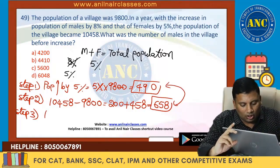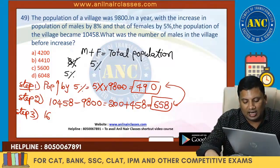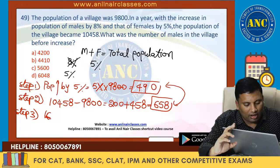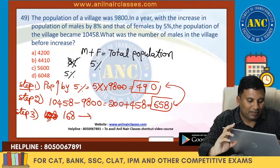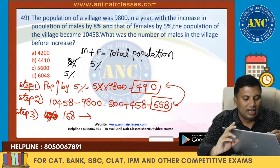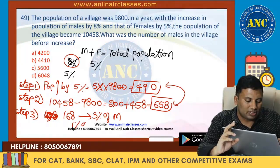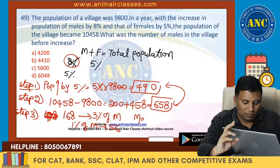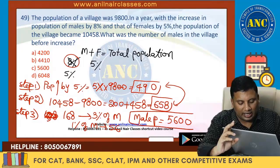One percent of male population is 56. So male population is nothing but 5600. I hope the idea is clear. Male population is nothing but 5600.